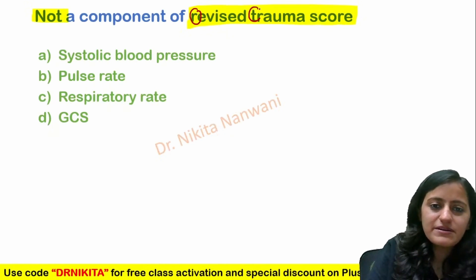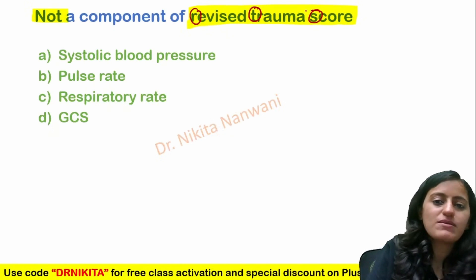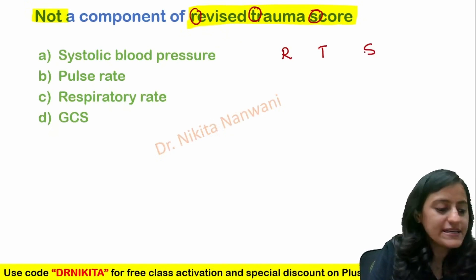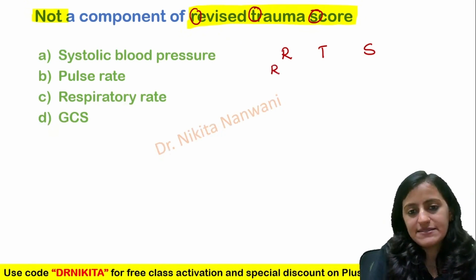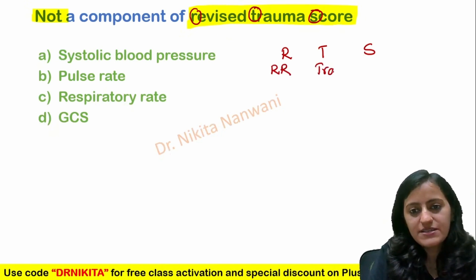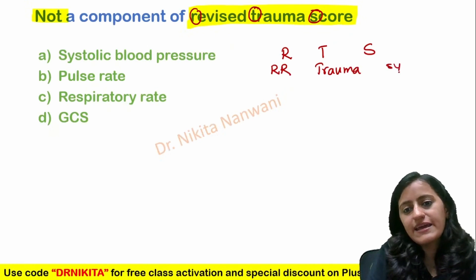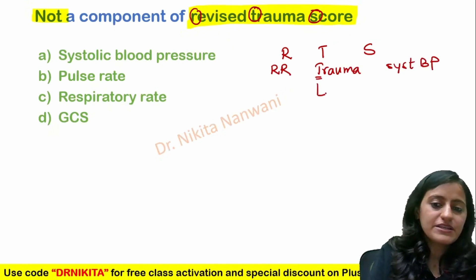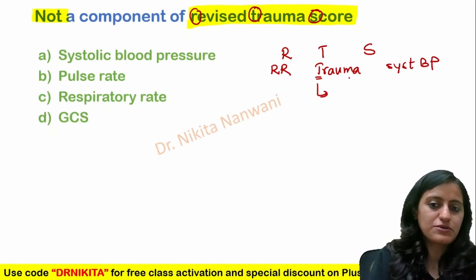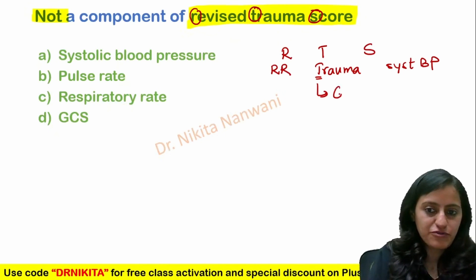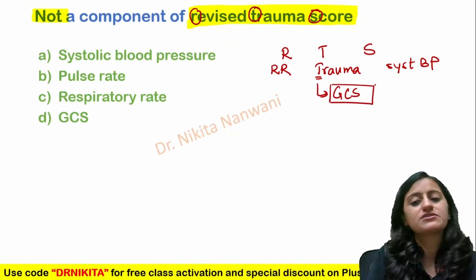The trick to remember here is that revised trauma score is RTS. The components are also RTS — R for respiratory rate, T for trauma, and S for systolic blood pressure. The T for trauma tells you that the first score we do in a patient of trauma is GCS.